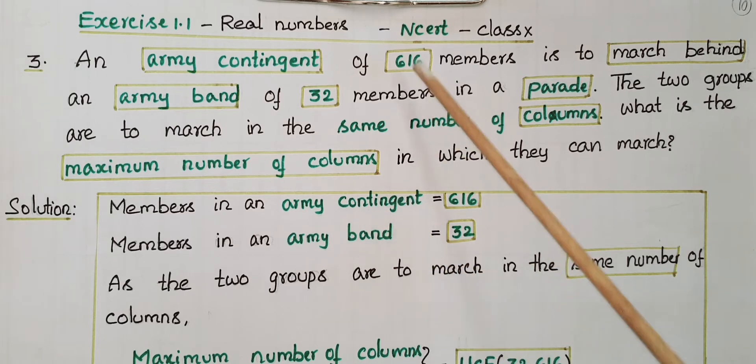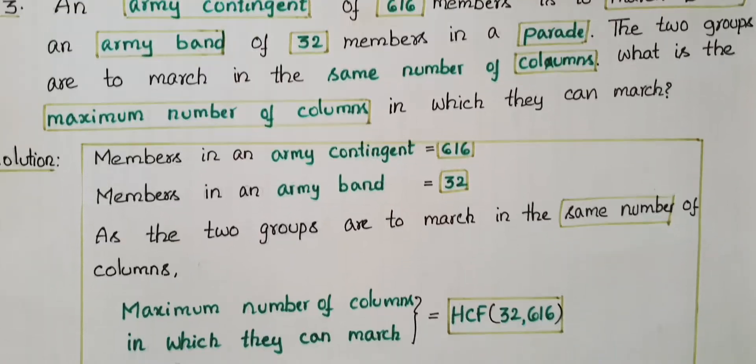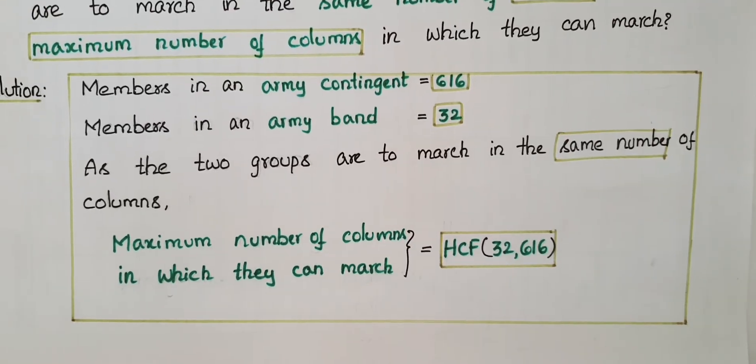Here members in an army contingent are given that is 616, and members in an army band is equal to 32 members. There are two groups, and the two groups are to march in the same number of columns. We have to find the maximum number of columns in which they can march.